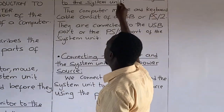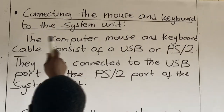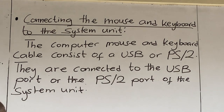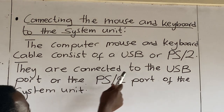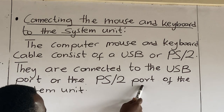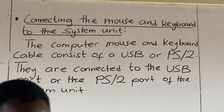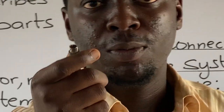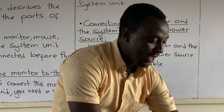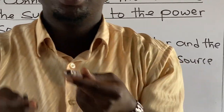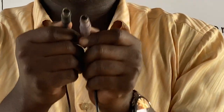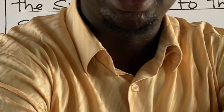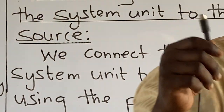Connecting the mouse and keyboard to the system unit. The computer mouse and keyboard cable consist of a USB or PS2 cord or end. They are connected to the USB ports or the PS2 ports of the system unit. Other mouse and keyboards have USB ends, while some use PS2 cables.